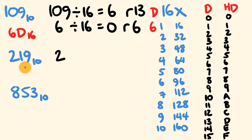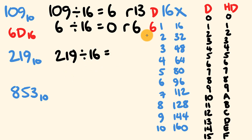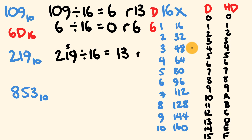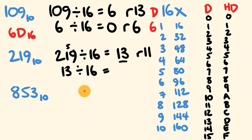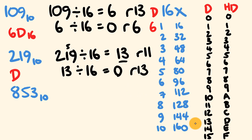Next, 219 divided by 16: 21 divided by 16 is 1, carrying 5; then 59 divided by 16 is 3 with a remainder of 11. Bring down 13; 13 divided by 16 is 0 with a remainder of 13. Reading upwards: 13 = D, 11 = B. So 219 base 10 equals DB base 16.